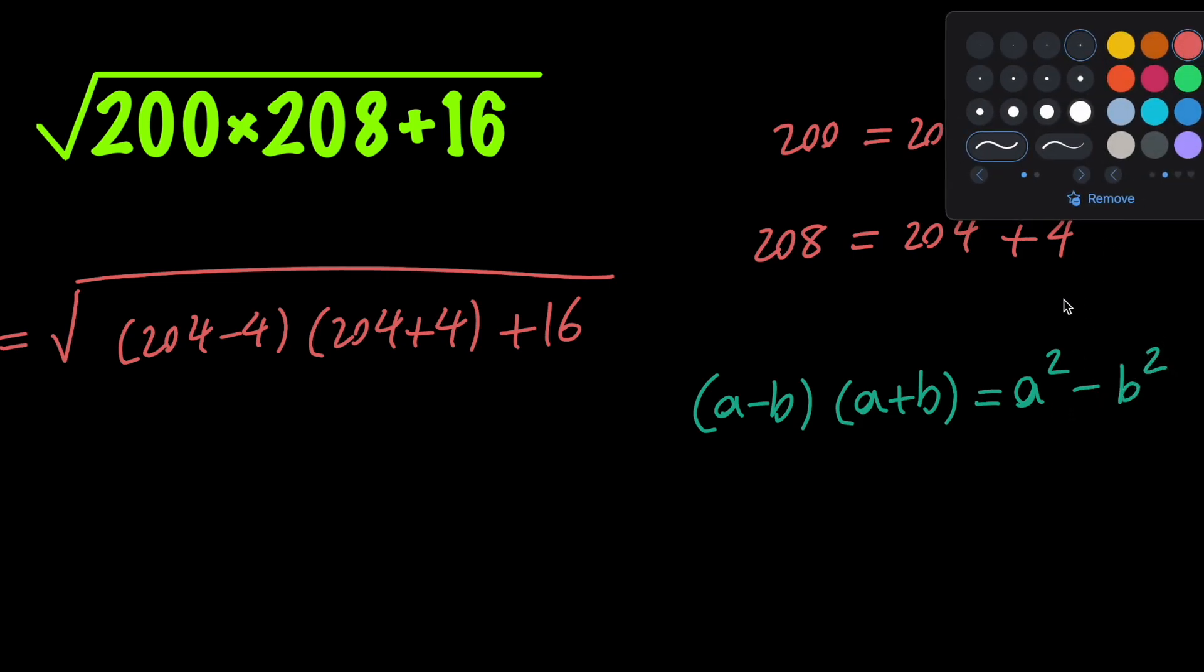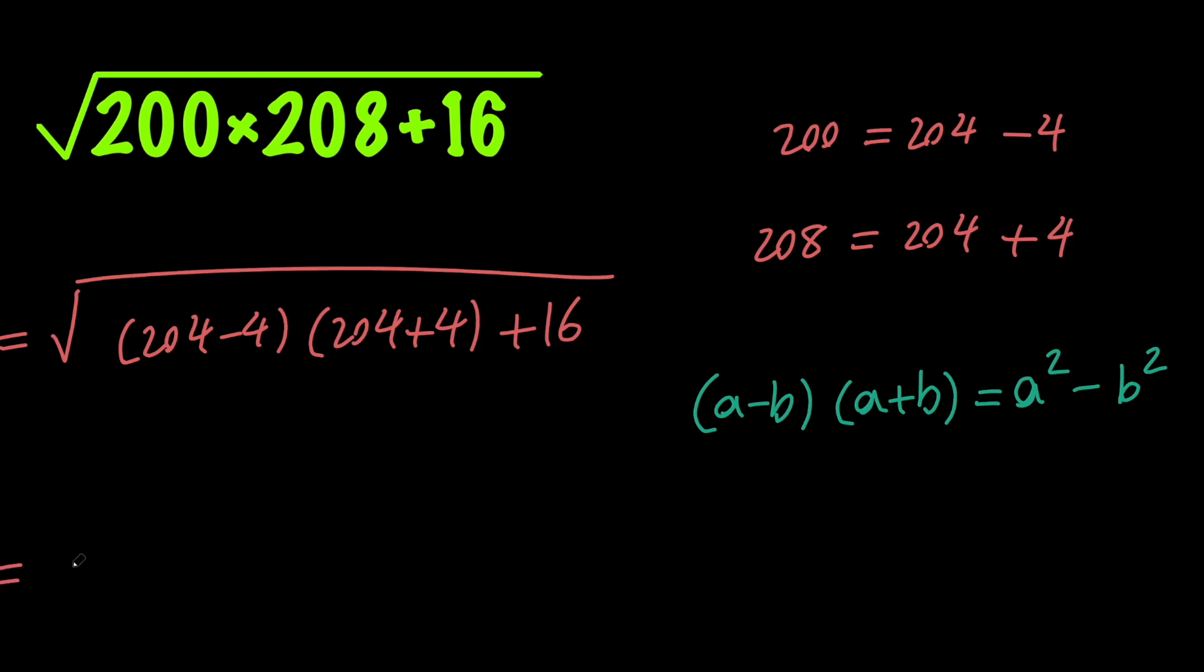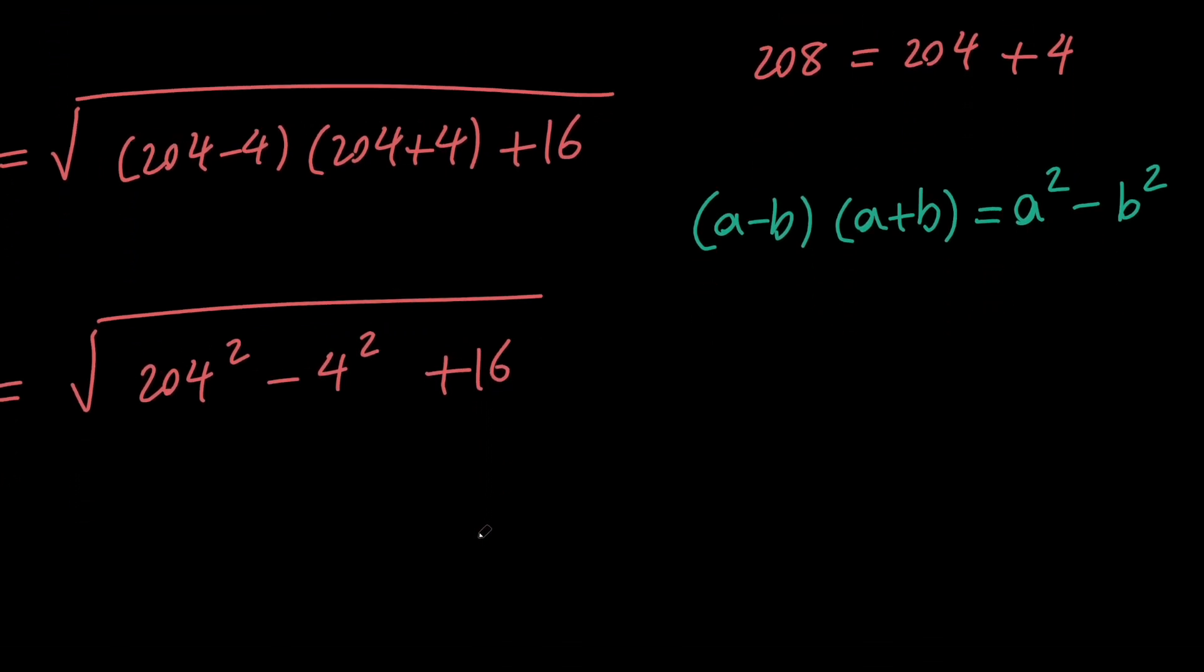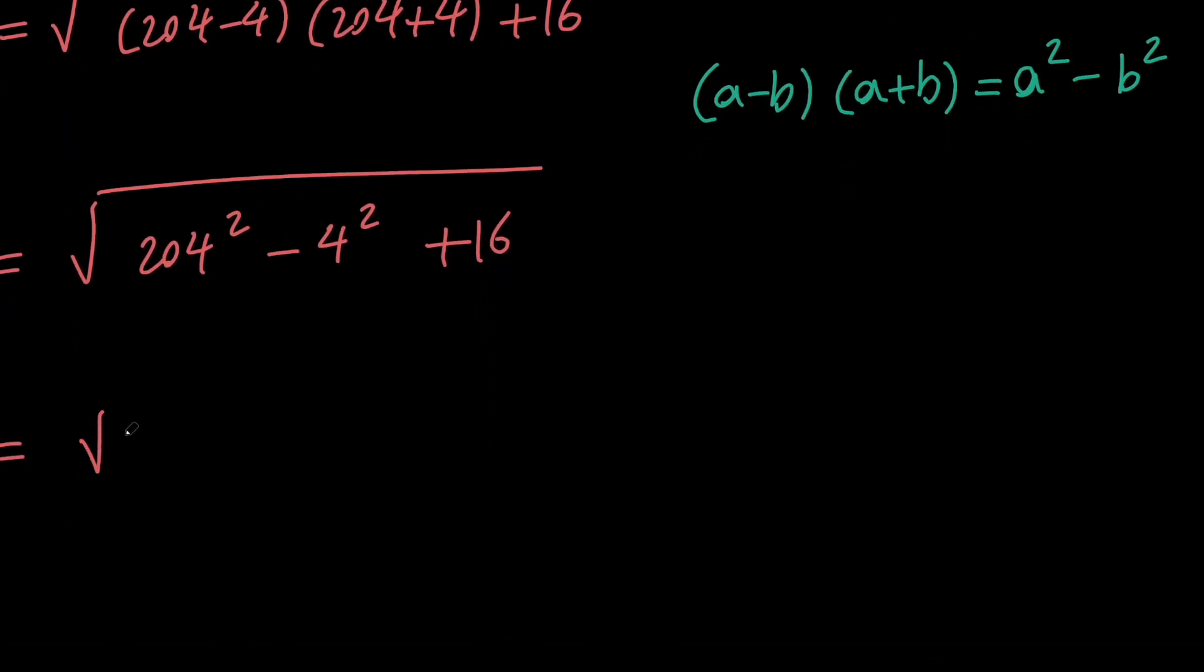So based on this, I can say that we have the square root of 204 squared minus 4 squared plus 16. Notice that 4 squared is 16, so this equals the square root of 204 squared, which equals 204. Awesome.